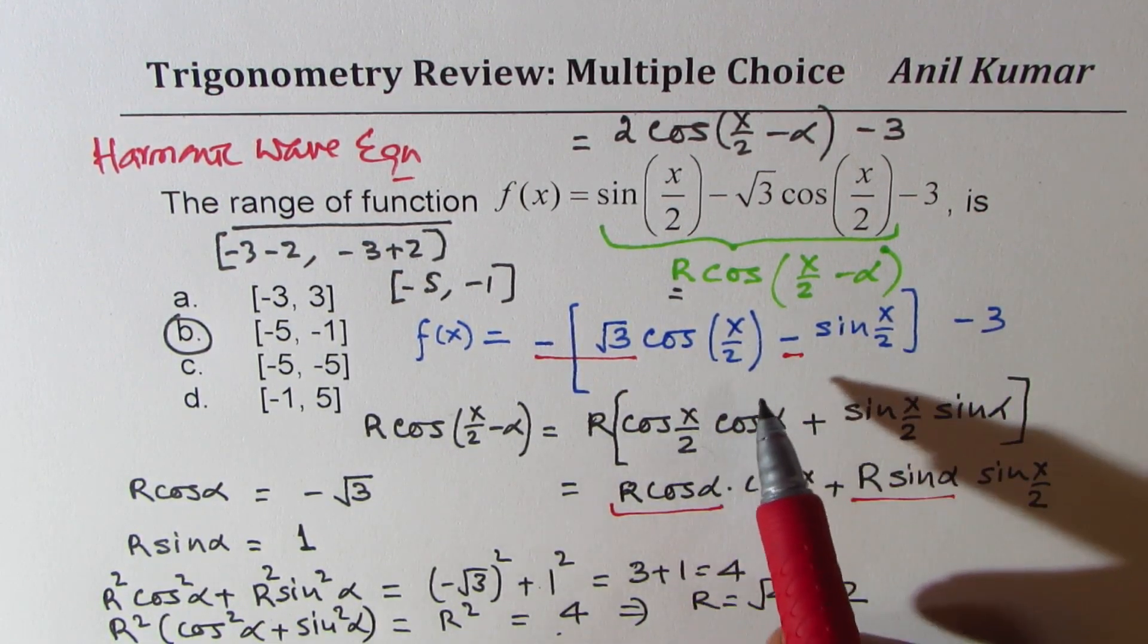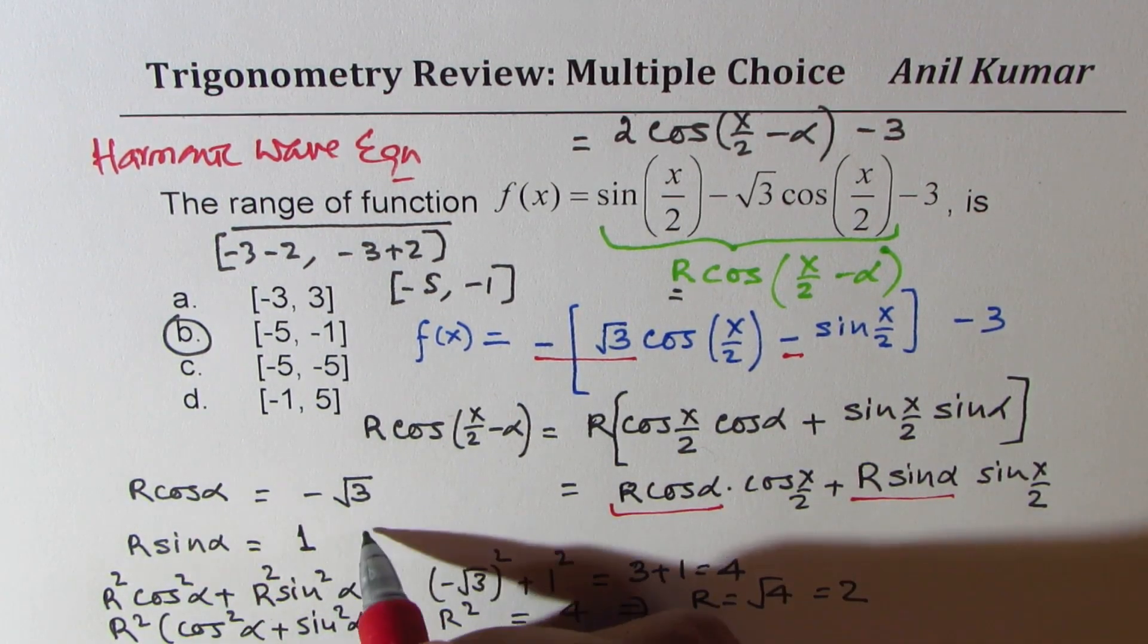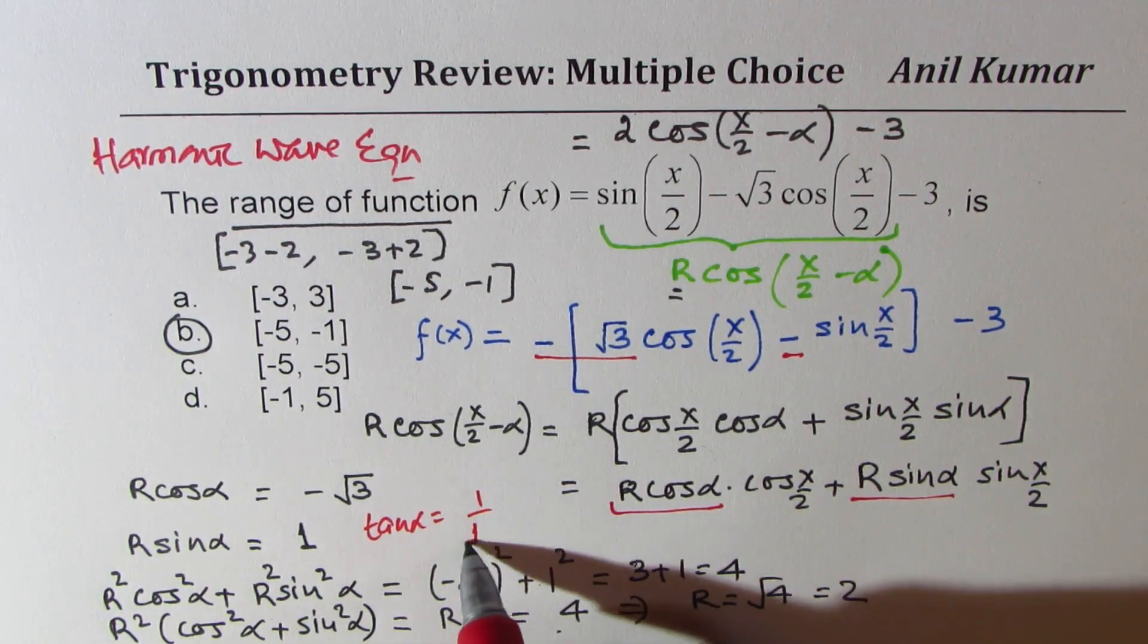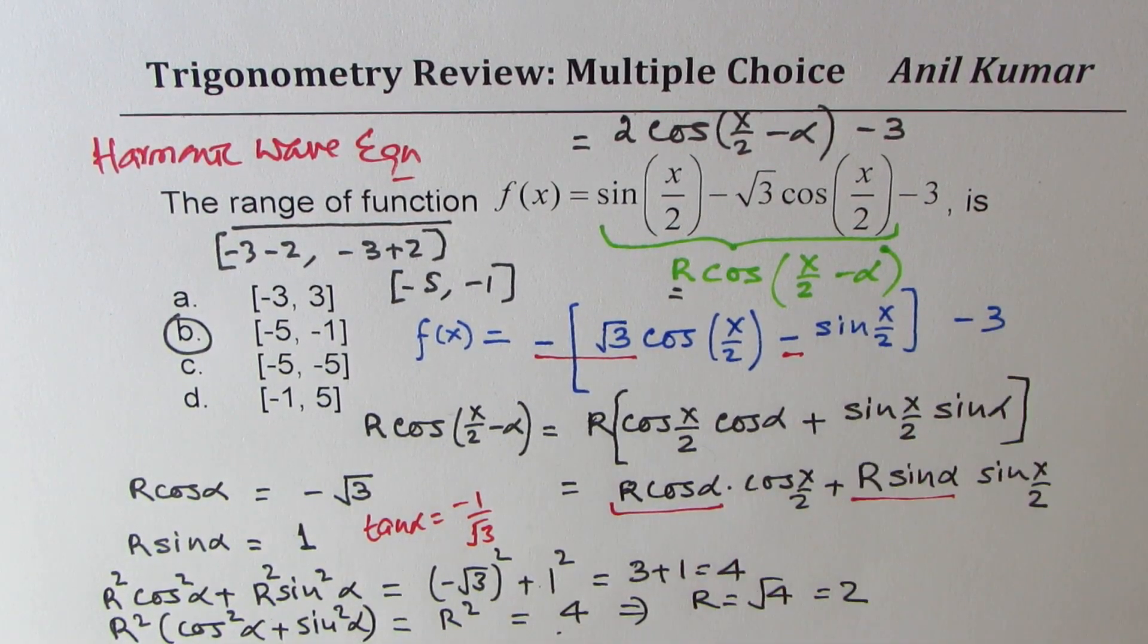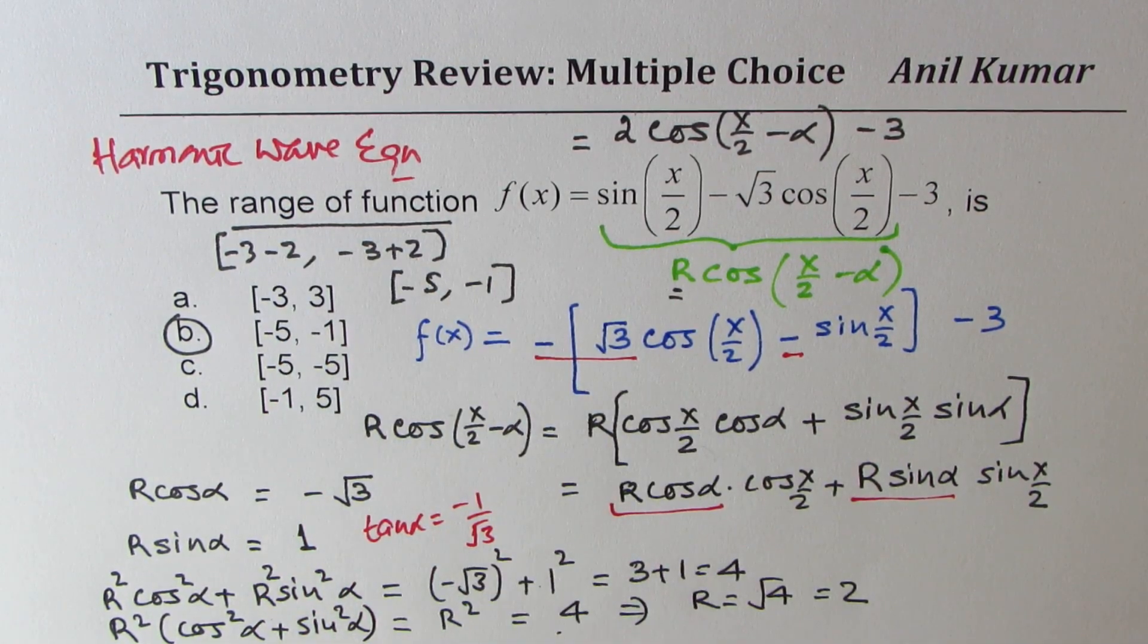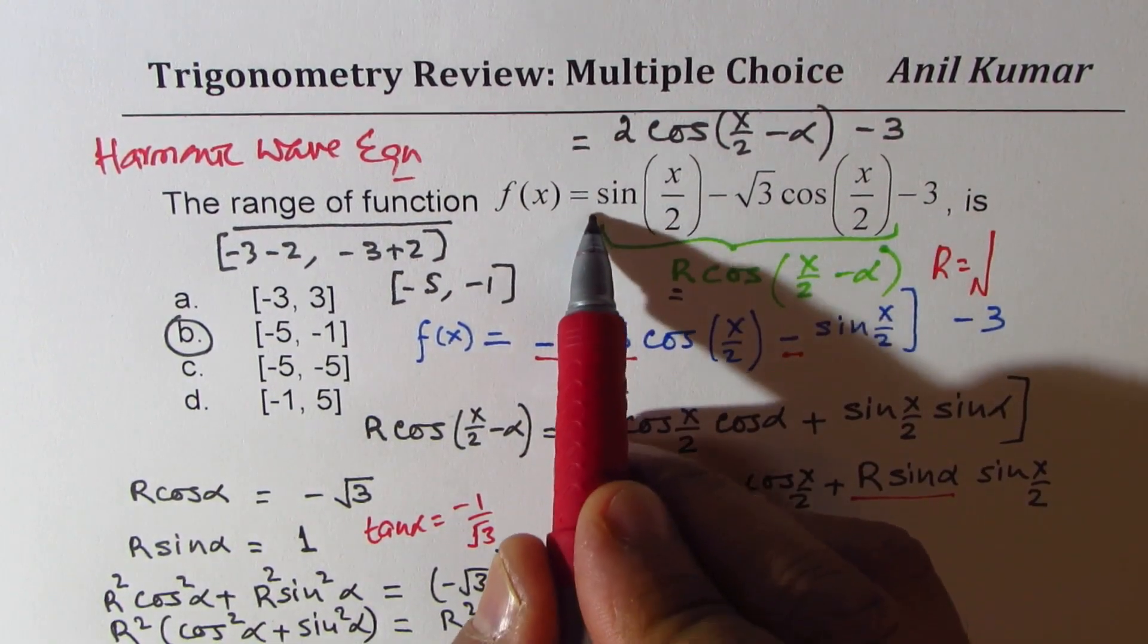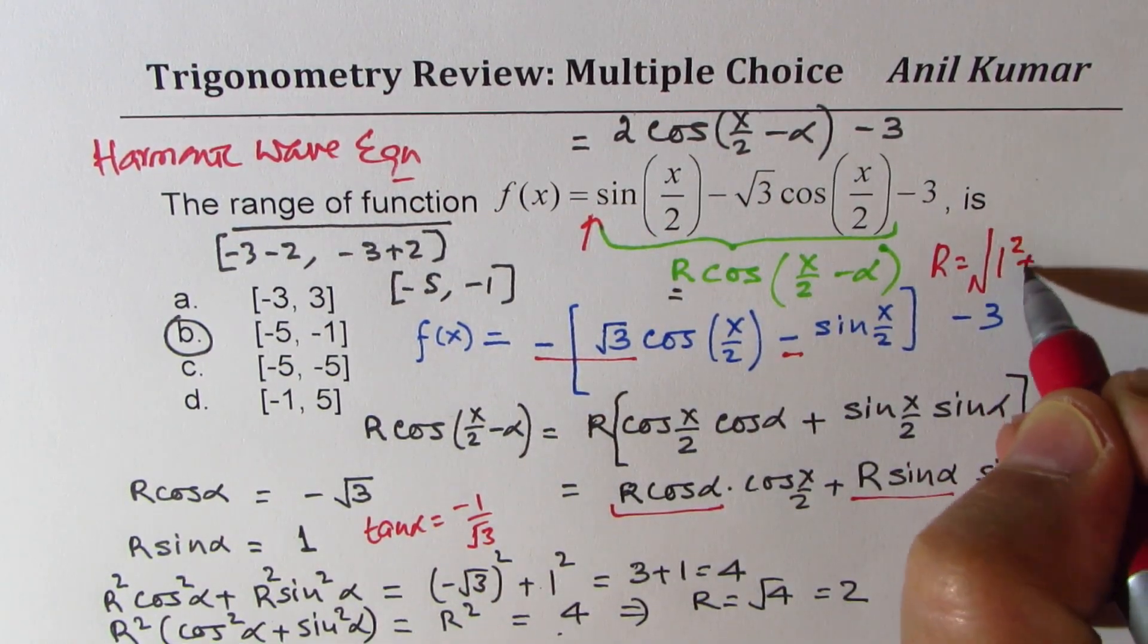You can find tan alpha as the ratio of these two. If you do tan alpha, that means we could do tan alpha equals 1 over square root 3 with a negative, so you get alpha. You could also find the complete expression, but since we were only interested in range, we did not calculate this.